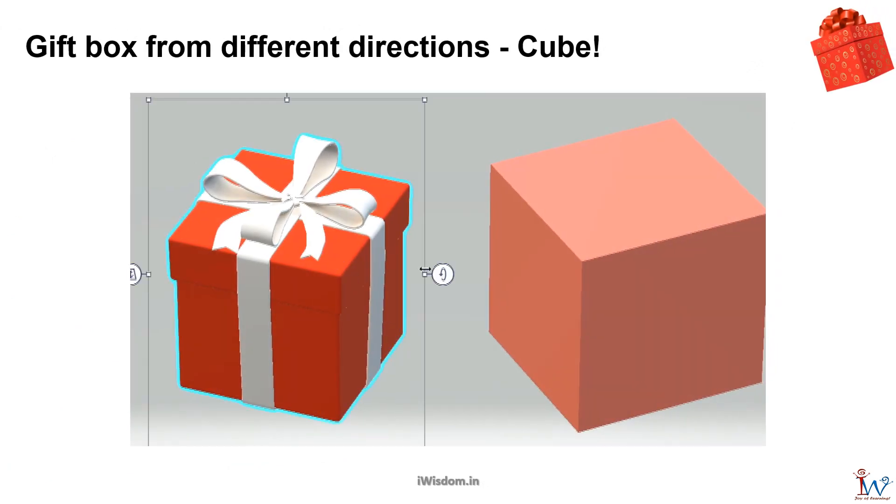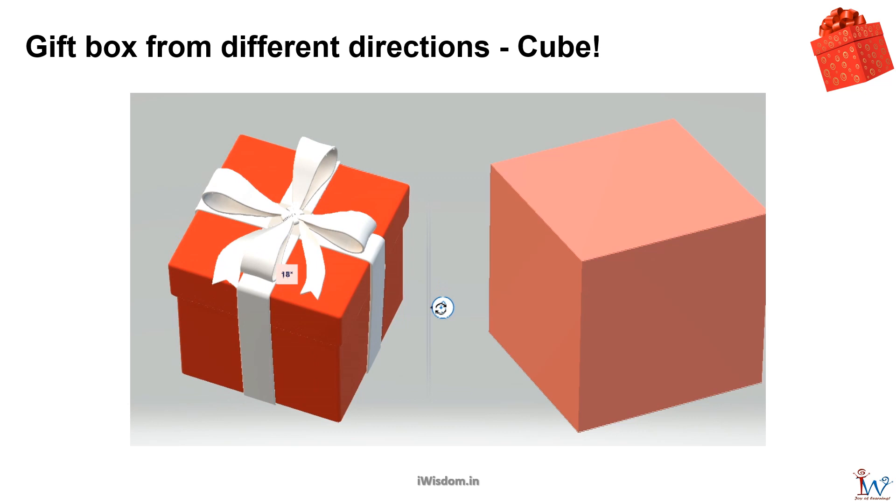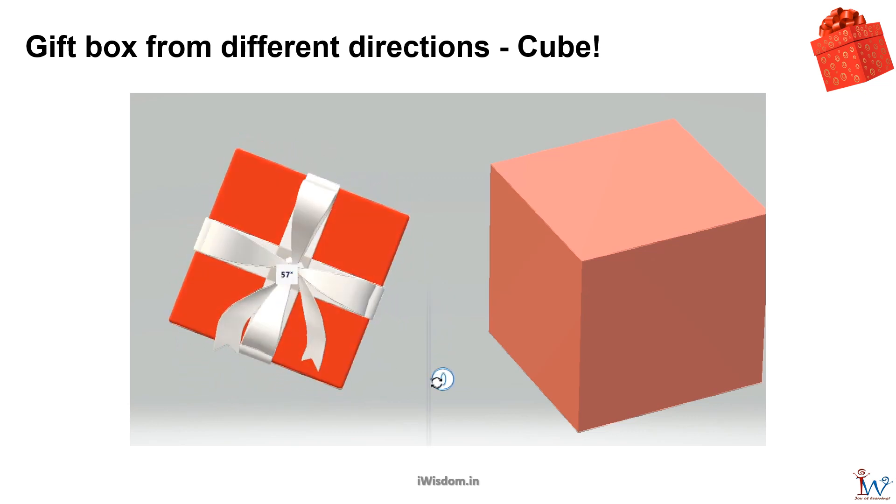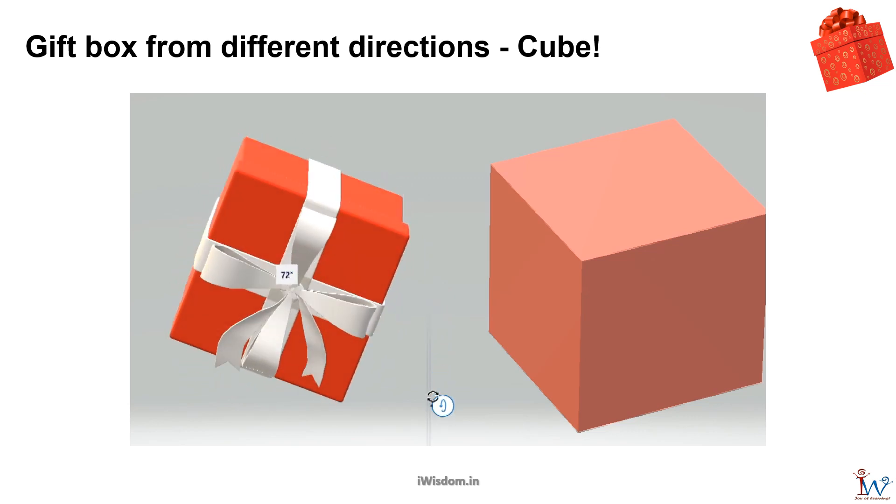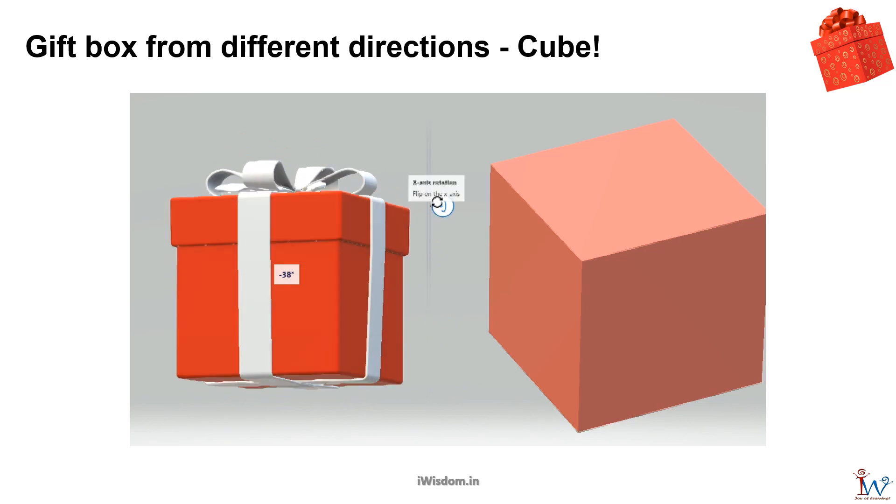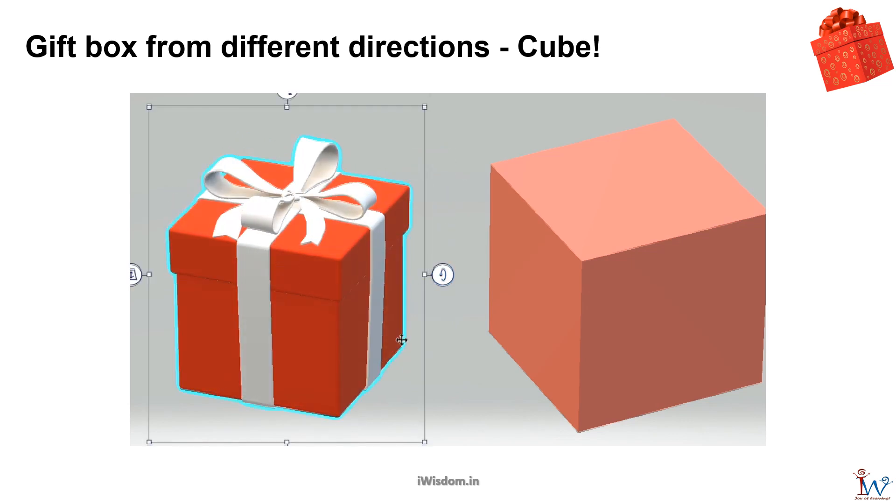Objects like the gift box shown have flat square sides and look like squares from all directions. They are called cubes. When you place them on a table, they form a square shape on the table.